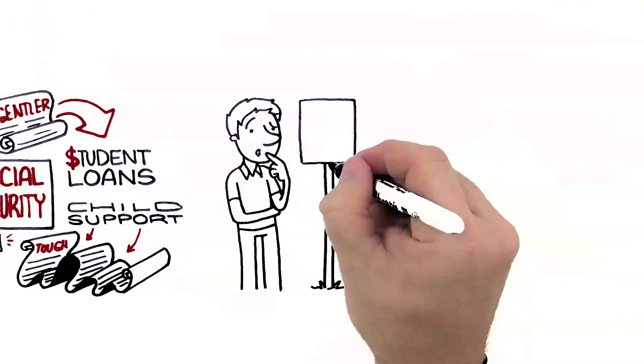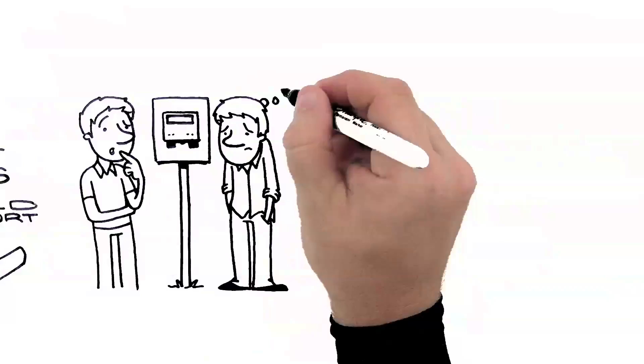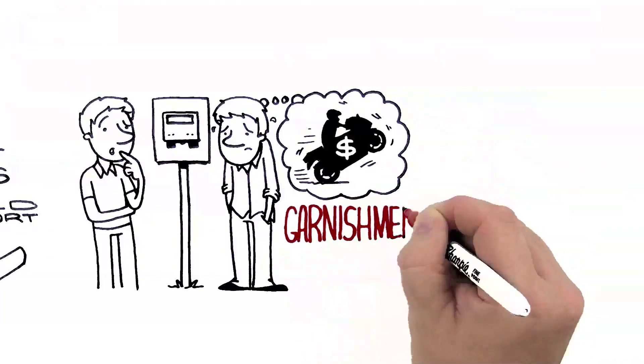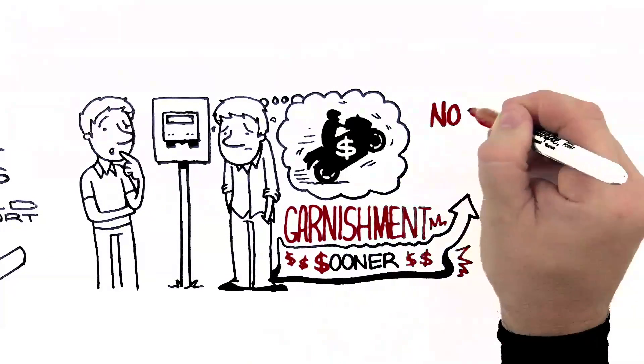But don't talk to Ted about tricks. He's not doing them anymore. His bike? Sold so he could get out from under garnishment sooner. Not so sweet.